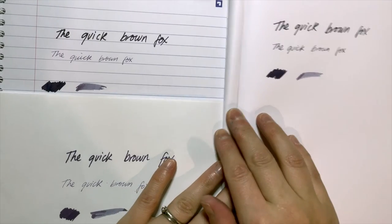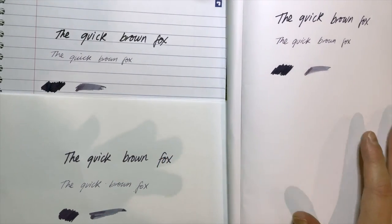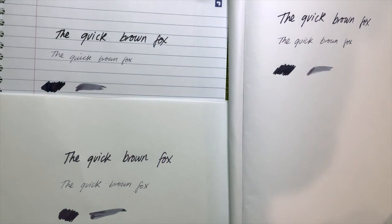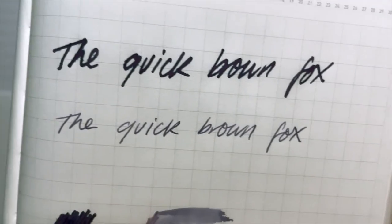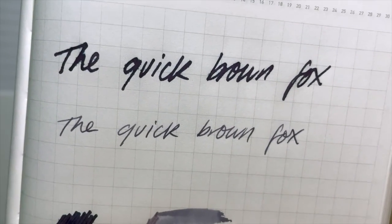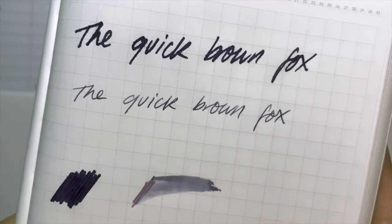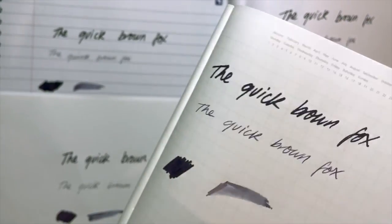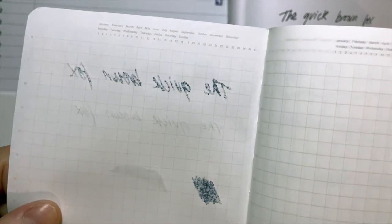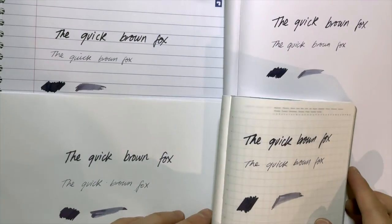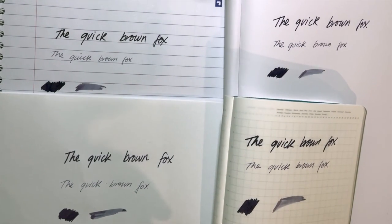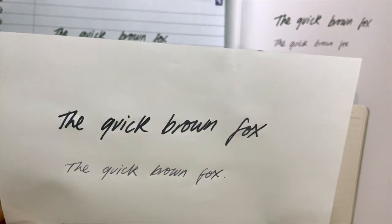In second place, it's the journals that I use, the Stalogy notebooks. You can see that the Moonman feathers quite a bit, it bleeds like crazy when I turn it over. The pilot fine nib however handles the paper really well, so I do think that this is a really good option. But of course in number one is the Tomoe River paper. No feathering, no bleed through, little bit of ghosting when I turn it around, but most importantly the ink just looks fabulous.